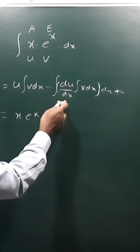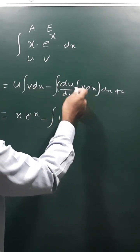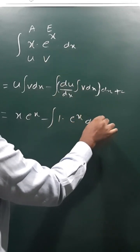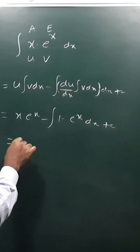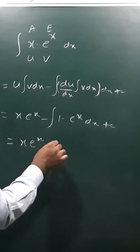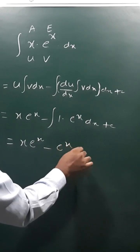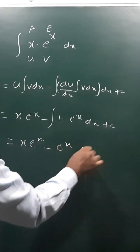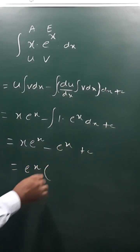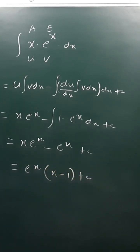The derivative of x is 1, and ∫eˣ dx is eˣ. So finally it equals x·eˣ − ∫eˣ dx, which is x·eˣ − eˣ + c. Taking eˣ as common, we get eˣ(x − 1) + c. That is the answer.